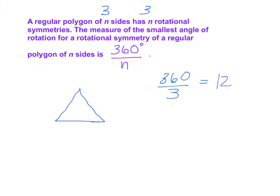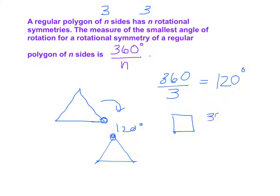For example, an equilateral triangle has three sides, so it has three rotational symmetries, and the smallest angle of rotation is 360 divided by 3, which is 120 degrees. If we rotate the triangle 120 degrees, it looks exactly the same. For a square, the smallest angle of rotation is 90 degrees, and it looks exactly the same after rotating 90 degrees.